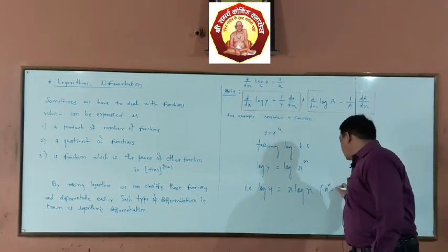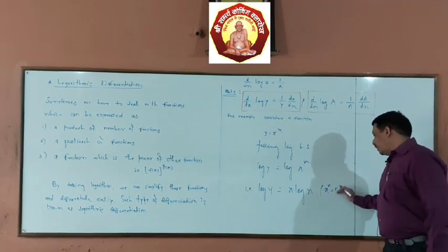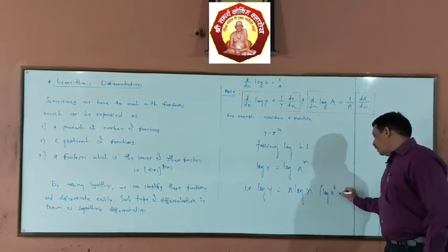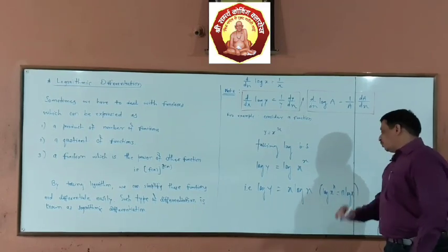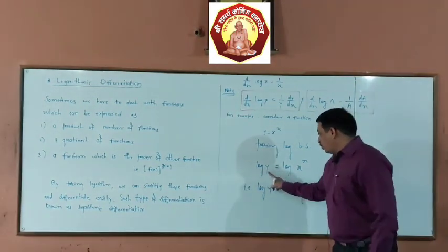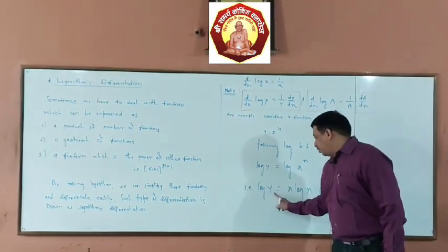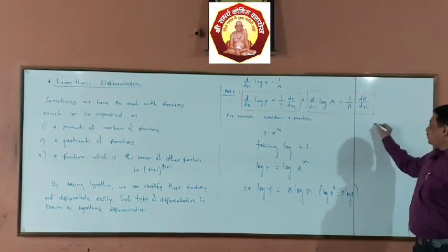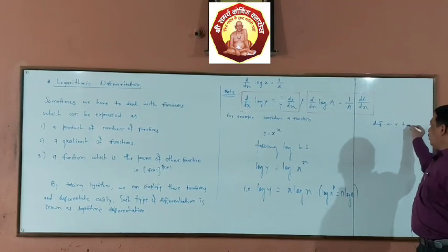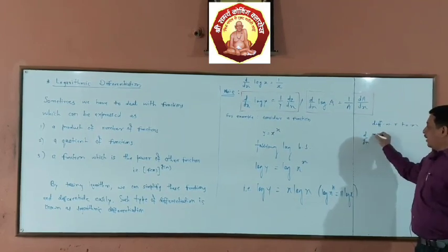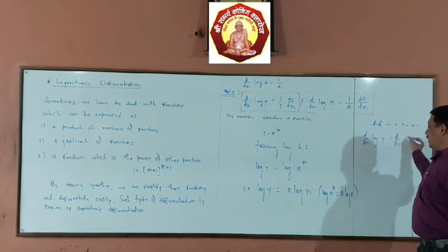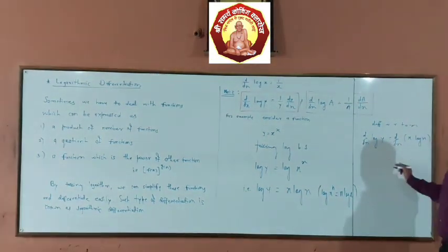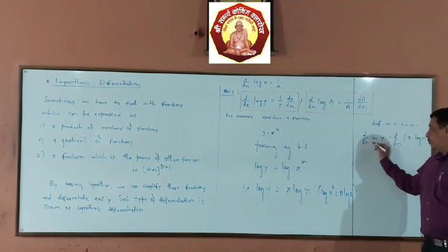Using the formula log(x^n) = n·log(x), we get log y = x·log x. Then differentiating with respect to x: d/dx of log y = d/dx of (x·log x).